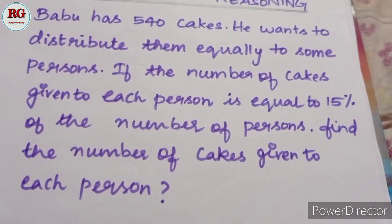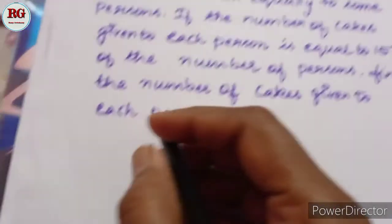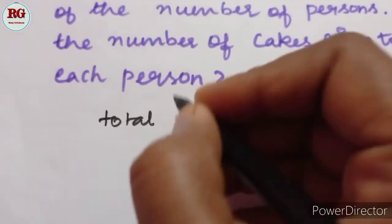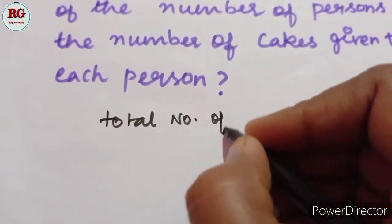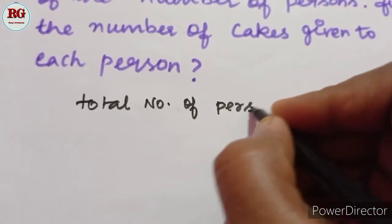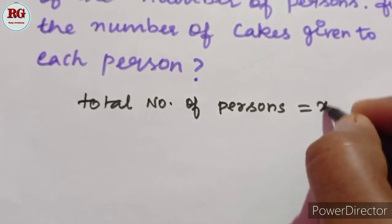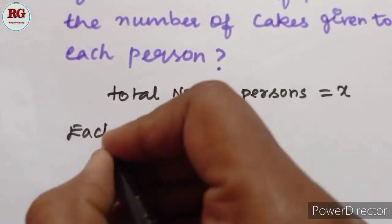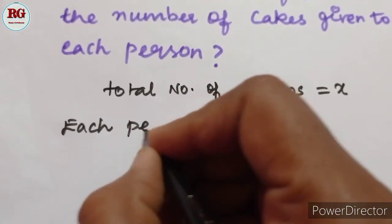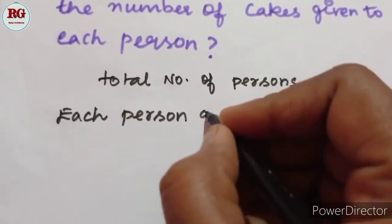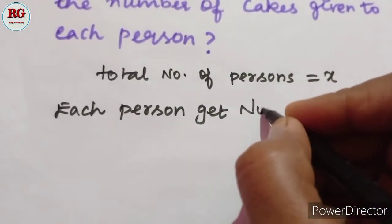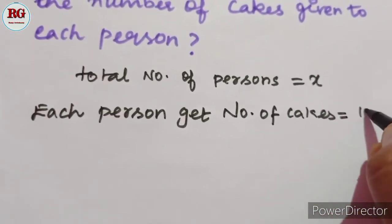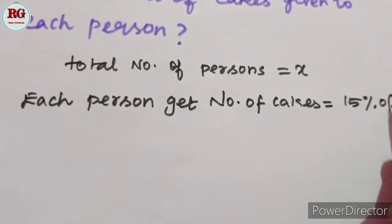Let's look at the solution. Total number of persons - let's call this X. Each person gets a number of cakes equal to 15% of X.